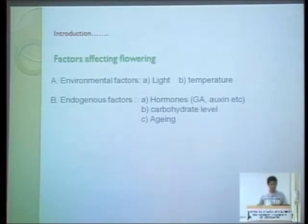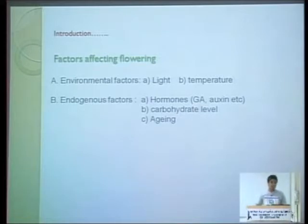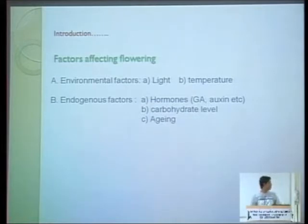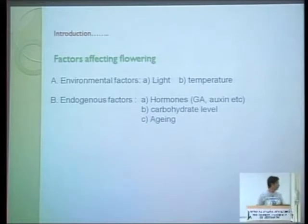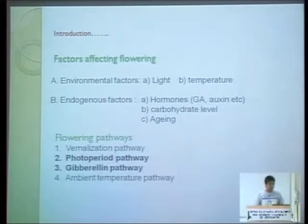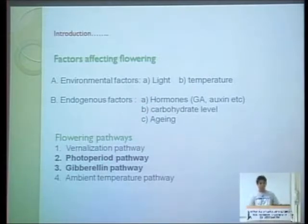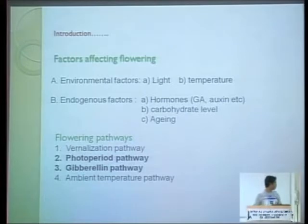There are two main important factors: environmental factors and endogenous factors. In environmental factors, light and temperature are the most dominant. In endogenous factors, plant internal hormones like GA, auxin, cytokinin, and carbohydrate levels also influence flowering time — normally more carbohydrate causes earlier flowering. Aging is also a factor. These factors all interact in various pathways.